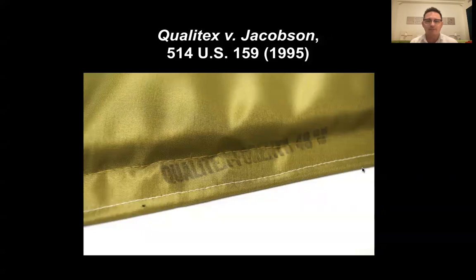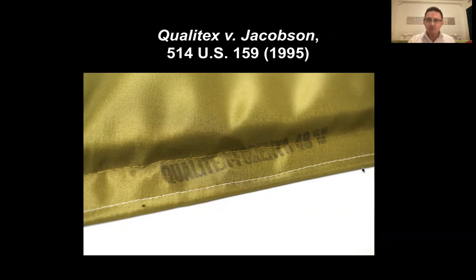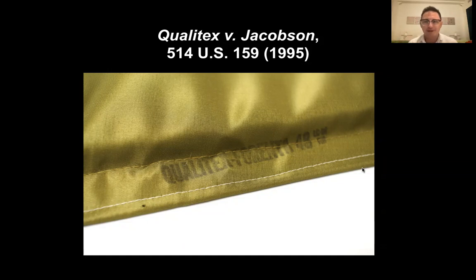The first case we'll look at is Qualitex v. Jacobson. That involved the question of whether color alone could be a mark that showed the source of a product. Qualitex had been in the dry cleaning pad business for a long time and was the largest provider of dry cleaning pads. Over a long period of time, it had developed a trademark color — a kind of green-gold color of the pad that you see depicted in the photograph in front of you, which you can see stamped 'Qualitex' on the pad itself.